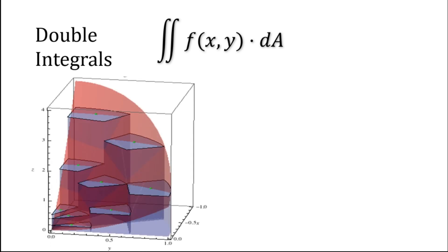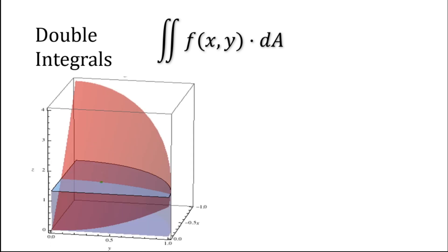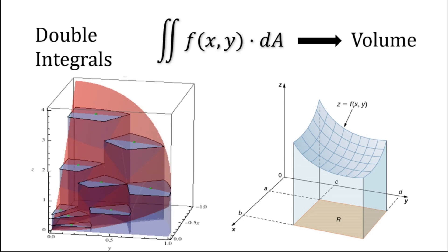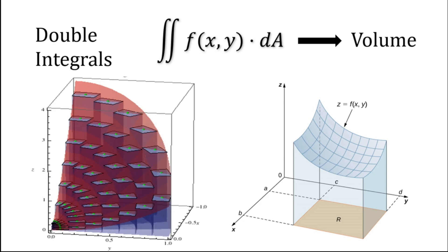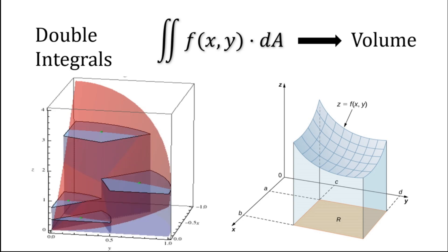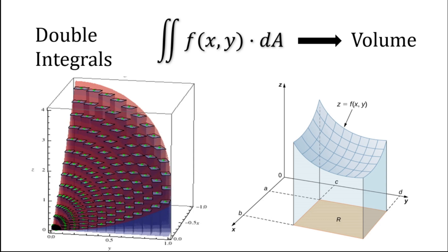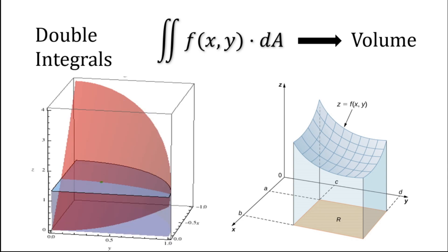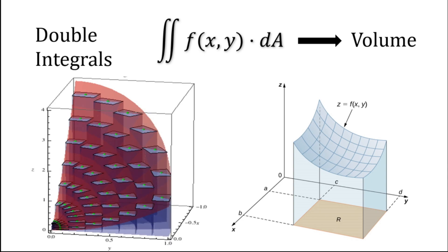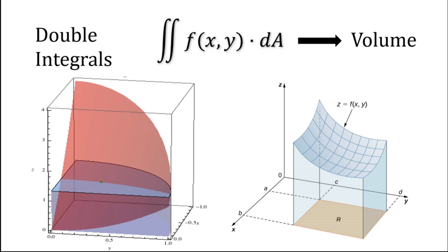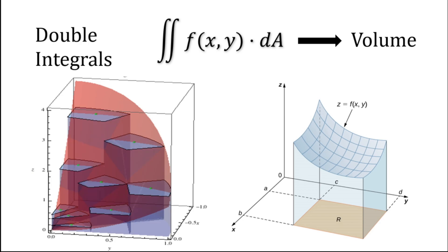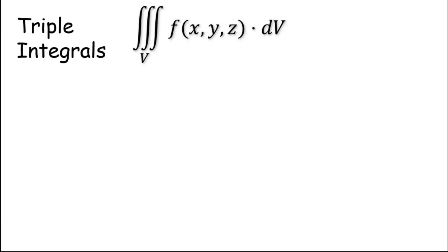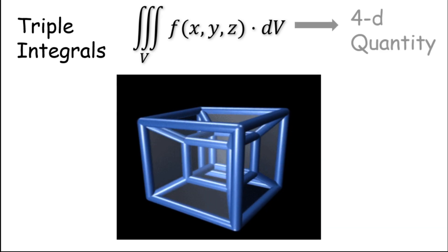Similarly, if we do double integrals of f along a 2D element — that is dA — what we are bound to get is the volume of that function. So if we integrate f with respect to dA, what we get is volume. From a single integral we got area, and from a double integral we get volume.